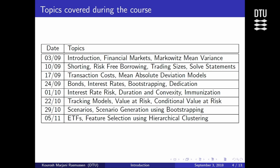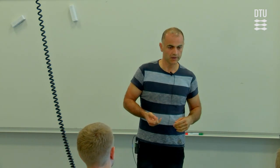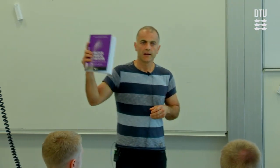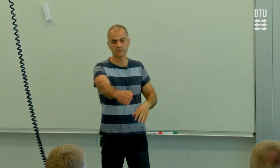Later topics include bonds, interest rates, bootstrapping, dedication, interest rate risk, duration, convexity, immunization, tracking models, Value at Risk, Conditional Value at Risk, scenario generation using bootstrapping, ETFs, and feature selection using hierarchical clustering. If you already know all these topics, you might not need to be here — but if not, you're in the right place. Most of these topics are covered in detail in the book 'Practical Financial Optimization.'